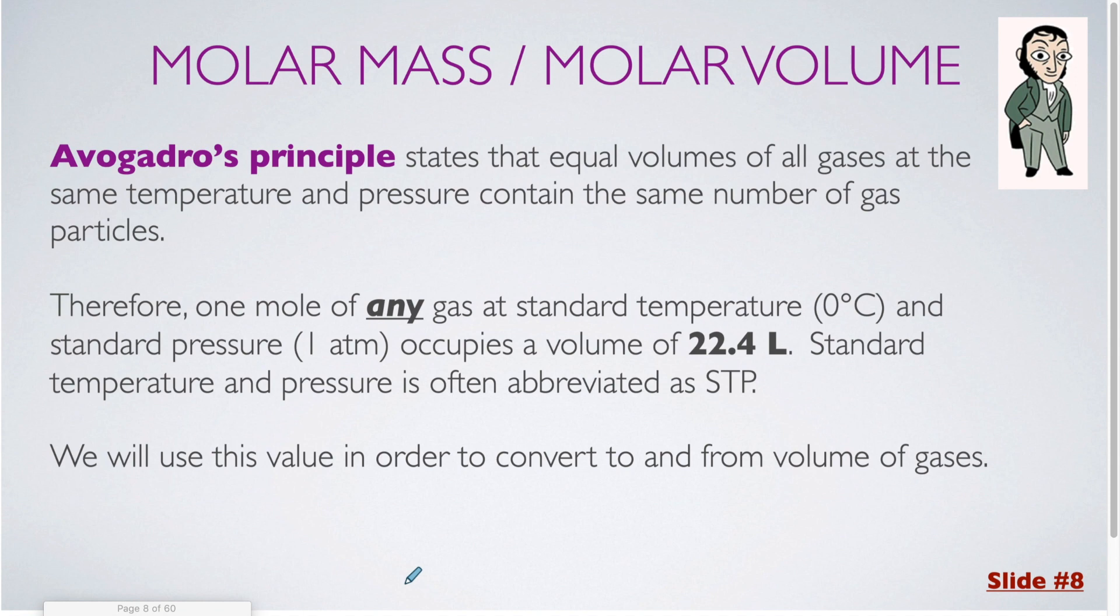Therefore, one mole of any gas at standard temperature, which is zero degrees Celsius, and standard pressure, which is one atmosphere, occupies a volume of 22.4 liters. Standard temperature and pressure is often abbreviated as STP. So for the calculations that we're going to be doing in this unit, any time that we are using a volume within our conversion factor, we are going to be plugging in 22.4 liters, and we're going to assume that it is at standard temperature and pressure.